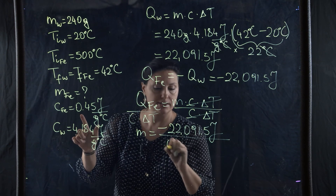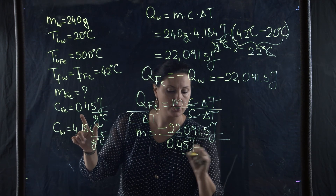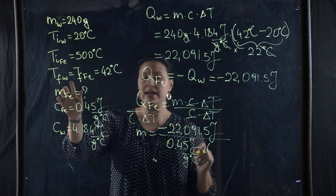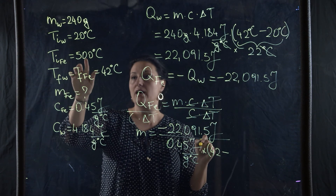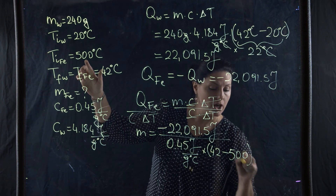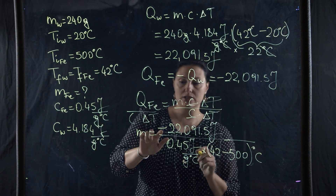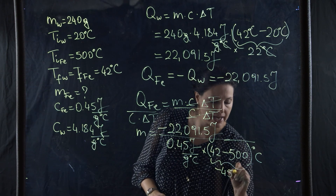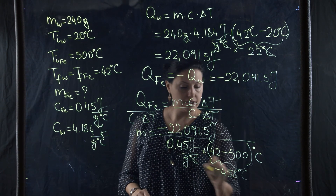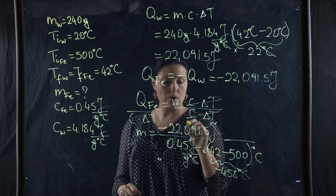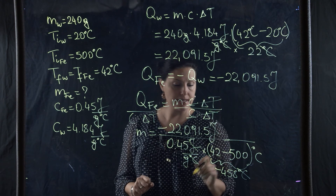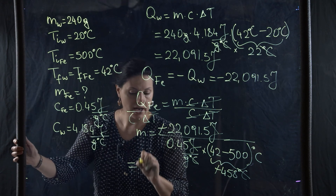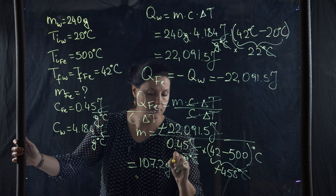Dividing by C for iron = 0.45 J/g°C, multiplied by ΔT = final minus initial = 42 minus 500 = minus 458 degrees Celsius. Degrees Celsius cancel, joules cancel, and the negative signs cancel, leaving a mass of 107.2 grams of iron.